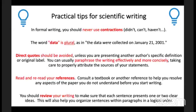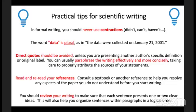Never use contractions in formal academic writing — 'I didn't,' 'we can't,' 'I haven't' should all be written out in full. A big mistake is the use of the word 'data' — that's plural, so write 'the data were collected,' not 'the data was collected.' Avoid direct quotes unless presenting another author's specific definition or original label — always try to paraphrase. Make sure to properly attribute the sources of all your statements.